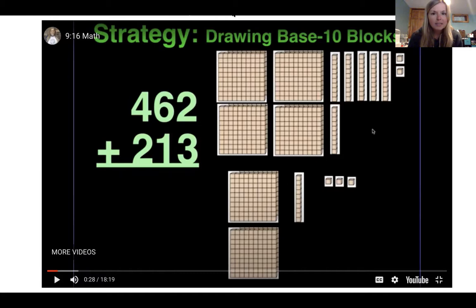6, 7, 5. I have 6 hundred and seventy-five. I have 6 one hundreds, 7 of these tens, and 5 ones total.